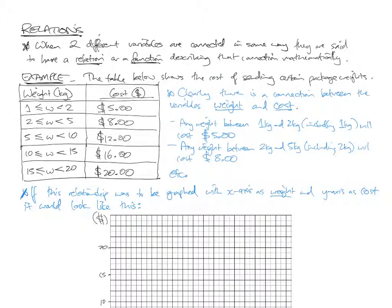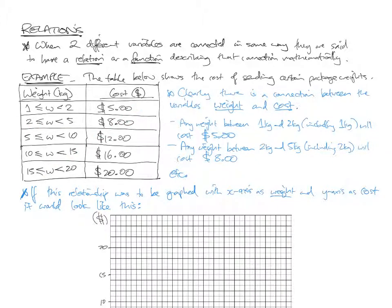Let's say this table below shows the cost of sending packages depending on their weights. So the weight in kilograms: if it's one kilo up to any weight less than two kilos, it's going to cost you five dollars. From two kilos to any weight less than five, it's going to be eight, and so on. Clearly, there's a connection between the variables weight and cost. It's not a linear one, because it stays the same cost for a certain weight, and then the cost jumps up to another set cost for a certain range of weights.